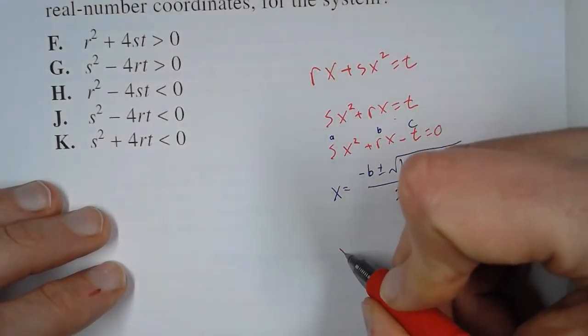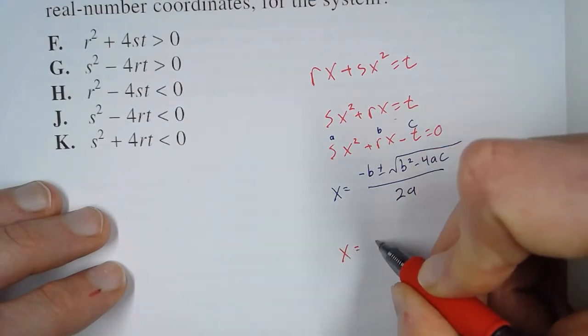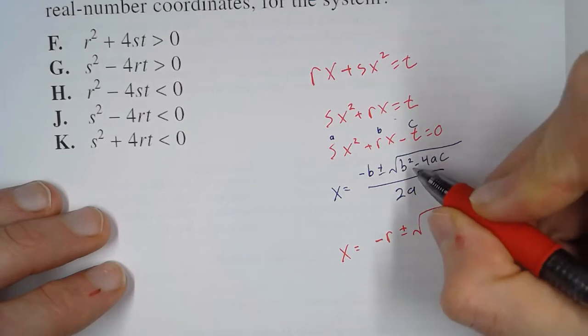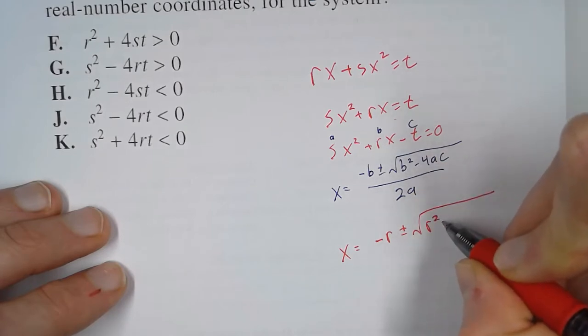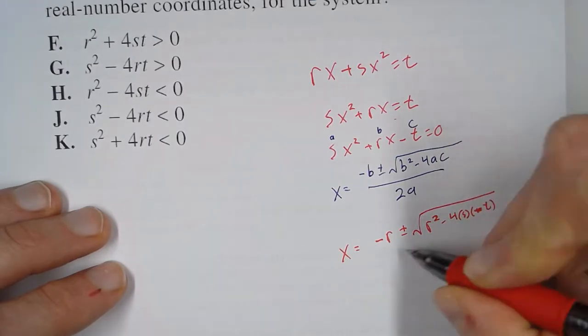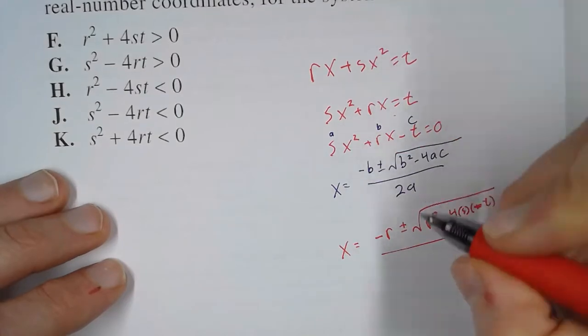So for our problem, we're going to have negative b, so that's negative r, plus or minus the square root of b squared, so that's r squared, minus 4a which is s, c which is negative t, all over 2a which is 2s.